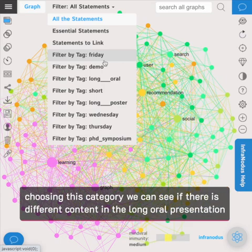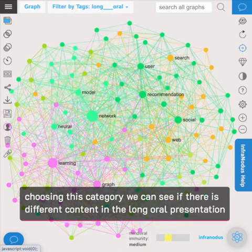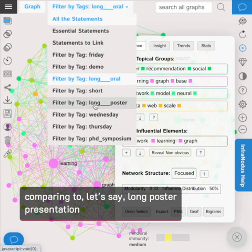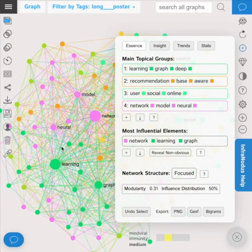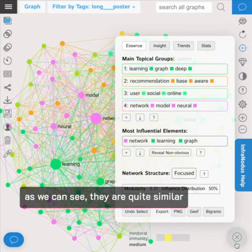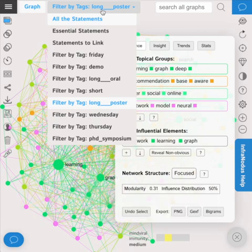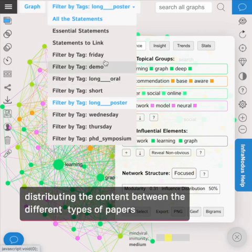Here we can see if there is any different content in the long oral presentations, comparing to long poster presentations. As we can see, they are quite similar. So this shows us that the people who organized the conference did quite a good job distributing the content between the different types of papers.